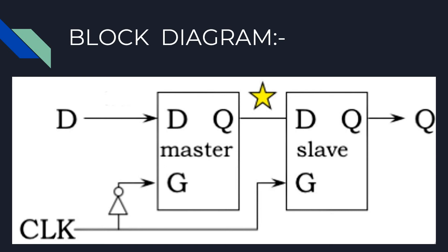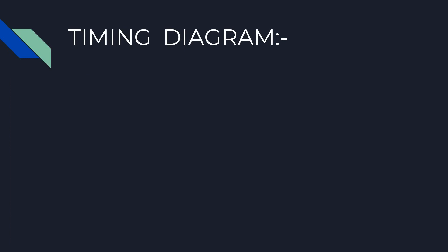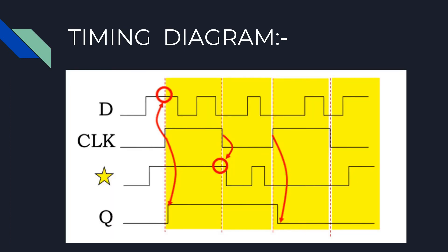You can see the star signal in the timing diagram which remains stable whenever the clock signal is high.